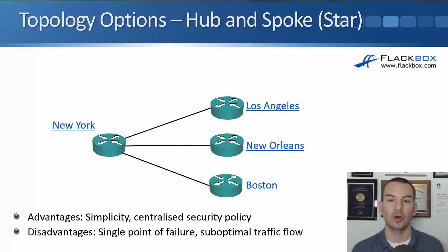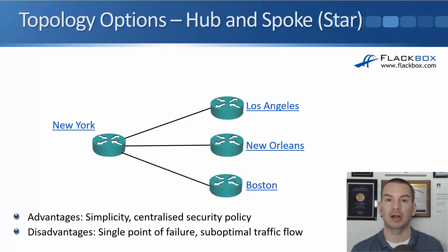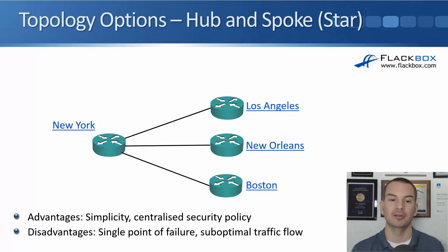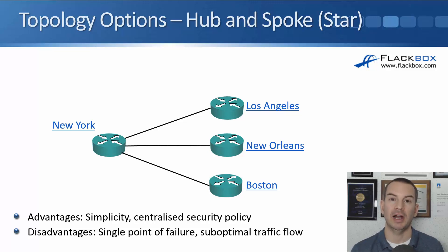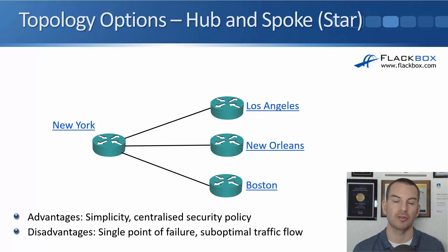The first topology option is hub and spoke, which is also known as star. In the example, New York is our hub site and the spoke sites are Los Angeles, New Orleans, and Boston. Probably New York is the headquarters and the other offices are the branches. All of the branch offices connect into the head office, which is the hub. So if Los Angeles wants to send traffic to Boston, that traffic will have to go via New York — we don't have a direct connection between any of the branch offices.